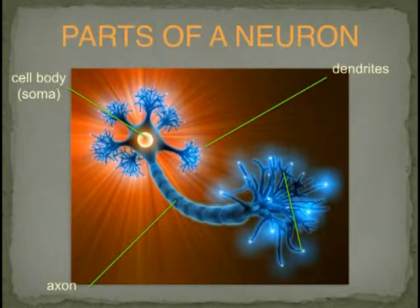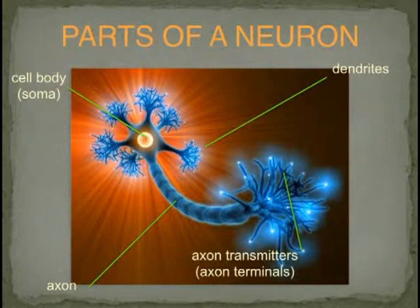The axon sends the electrical signal out to the end of the axon where these structures release a chemical into the space between the cell. What do we call those structures at the end of the axon? Axon transmitters.